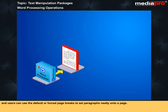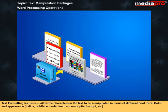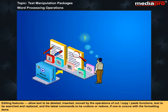Users can use default or forced page breaks to set paragraphs neatly onto a page. Text formatting features allow the characters in the text to be manipulated in terms of different font, size, color, and appearance, such as italics, boldface, underlined, superscript, or subscript. Editing features allow text to be deleted, inserted, moved by the operations of cut, copy, and paste functions, text to be searched and replaced, and the latest commands to be undone or redone if one is unsure about the formatting done.